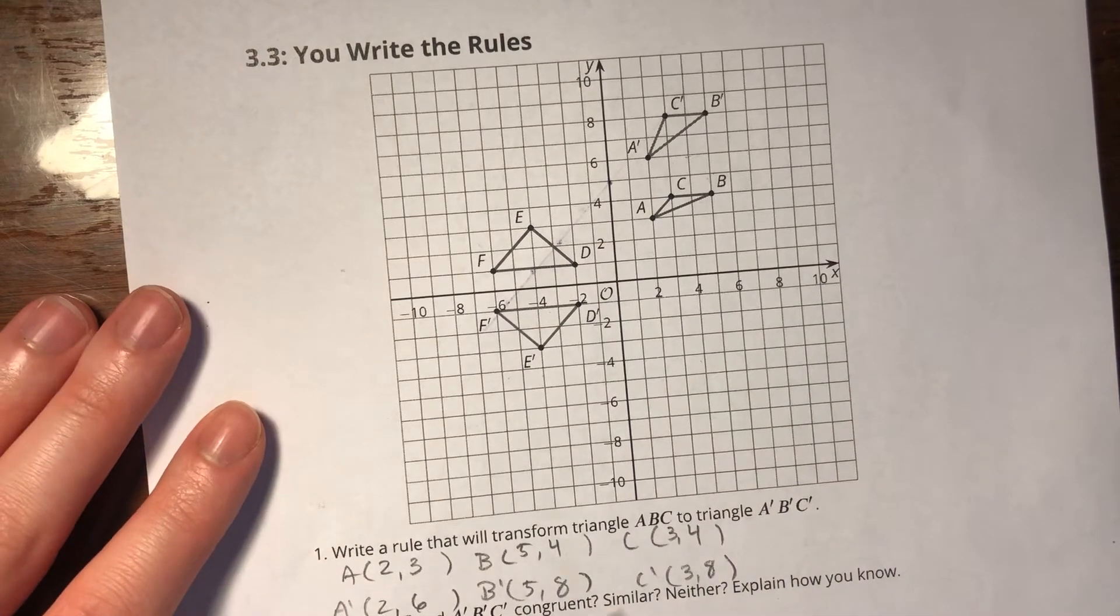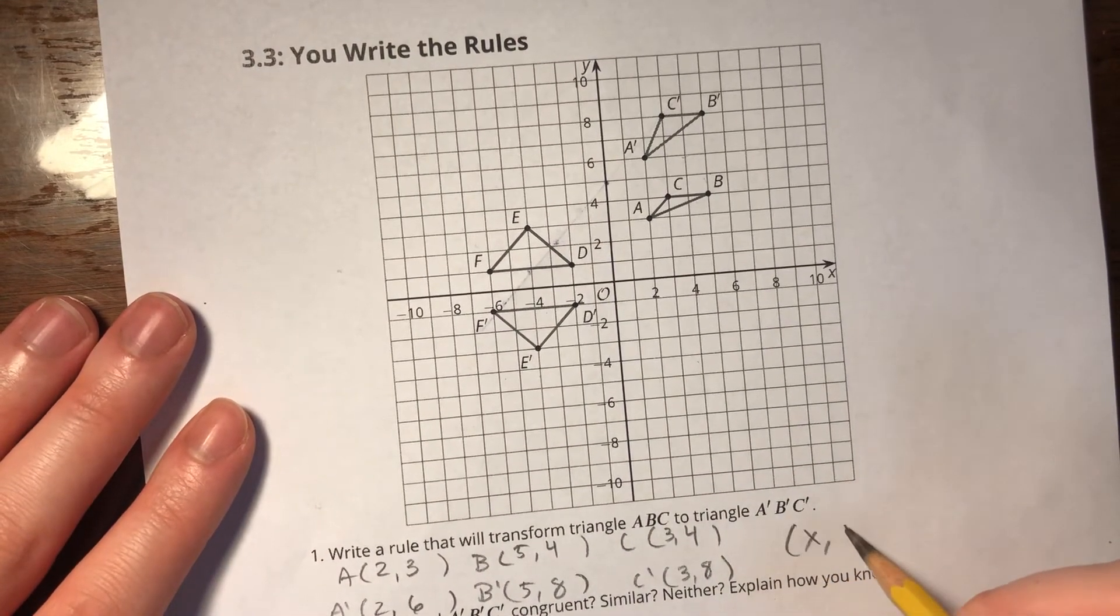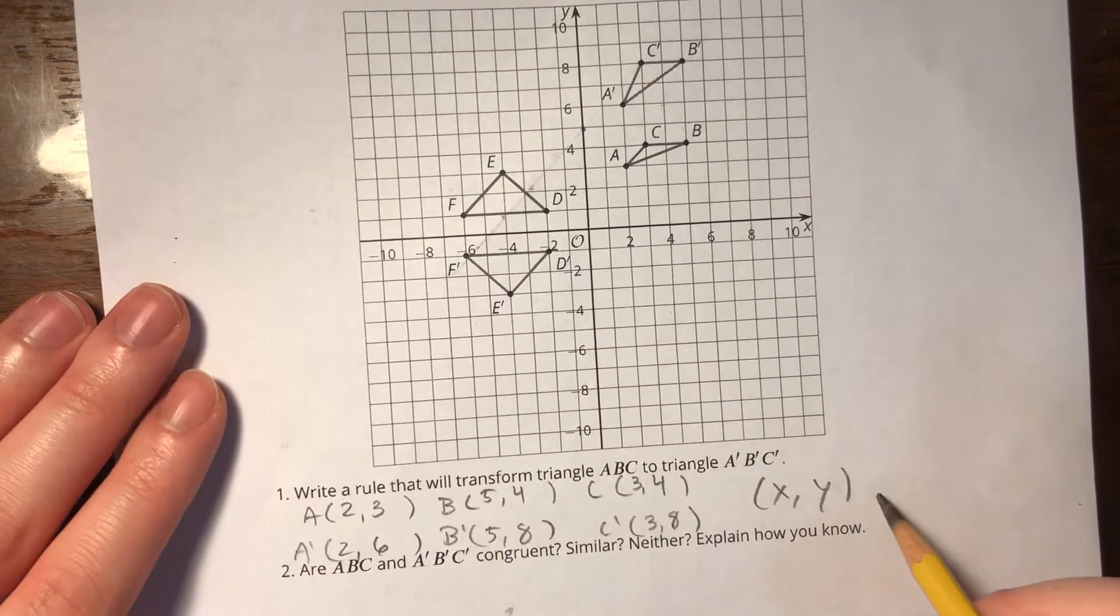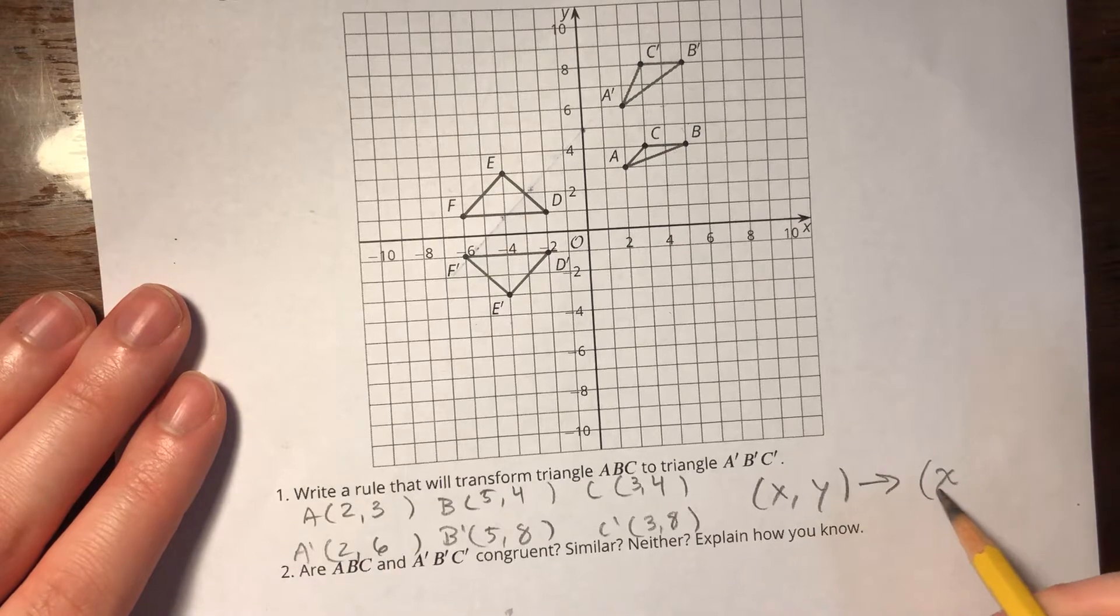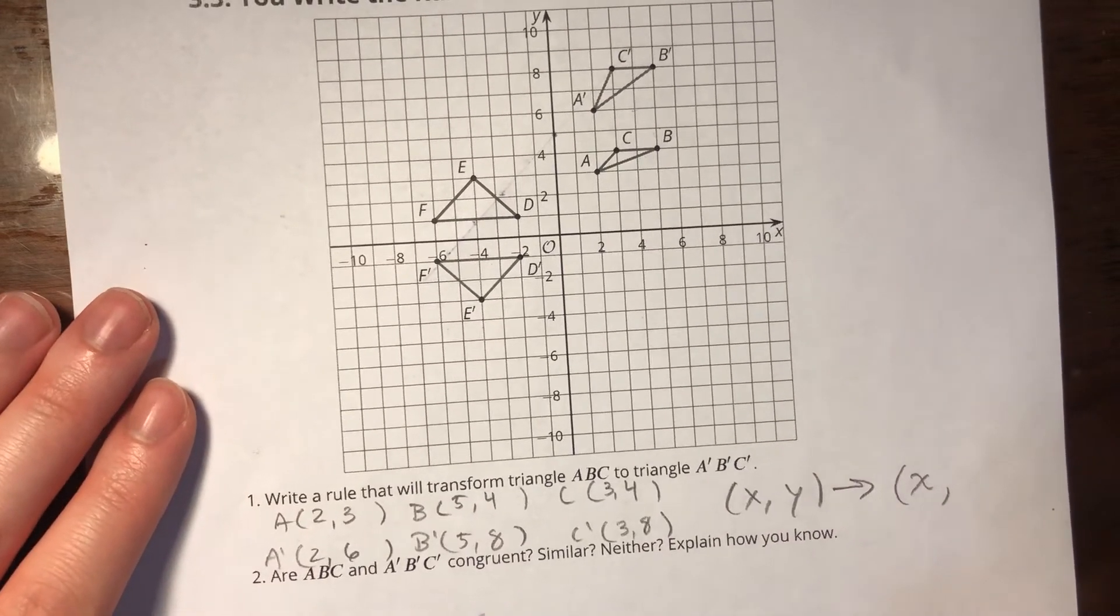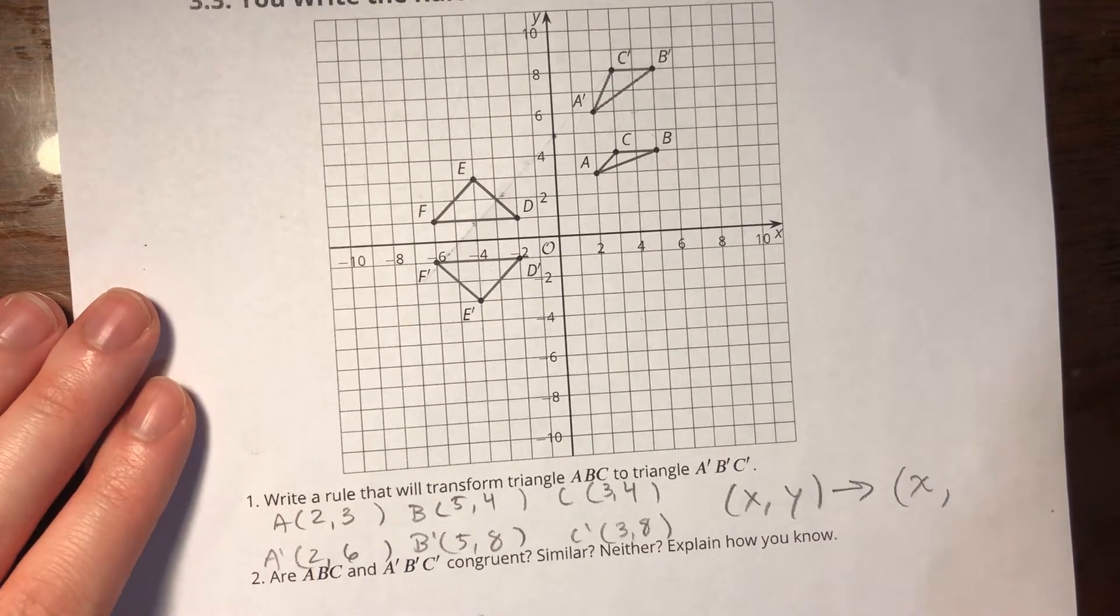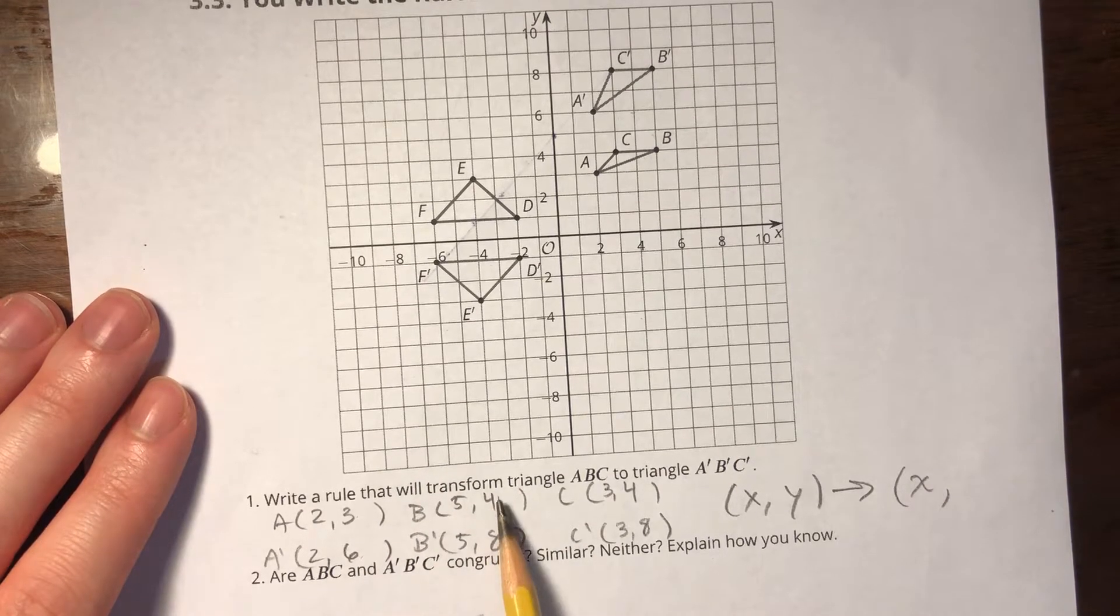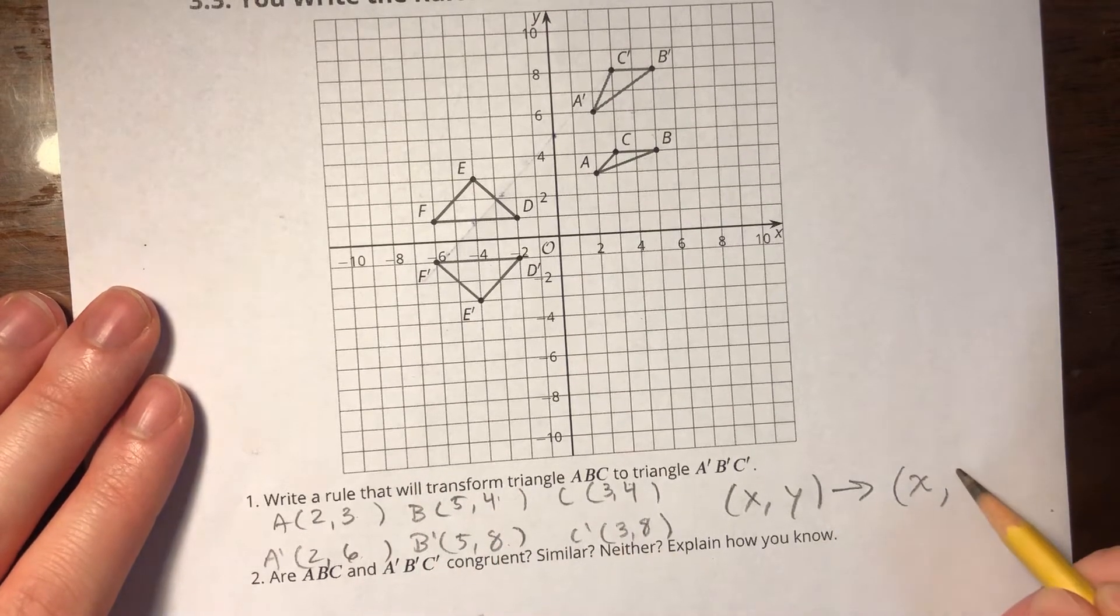Alright, so I can see that my x coordinates are not changing. Alright, 2 to 2, 5 to 5, 3 to 3. So I'm going to make sure in my rule that my x stays exactly the same. For my y coordinate, however, I'm multiplying the y coordinate by 2, it looks like. So that's 2y.